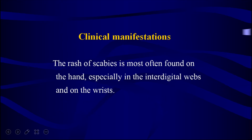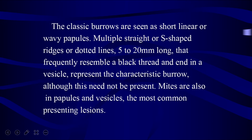Clinical manifestations. The rash of scabies is most often found on the hand, especially in the interdigital webs and on the wrists. The classic burrows are seen as short linear or wavy papules — multiple straight or S-shaped ridges or dotted lines, 5 to 20 millimeters long, that frequently resemble a black thread and end in a vesicle, representing the characteristic burrow, although this need not be present.